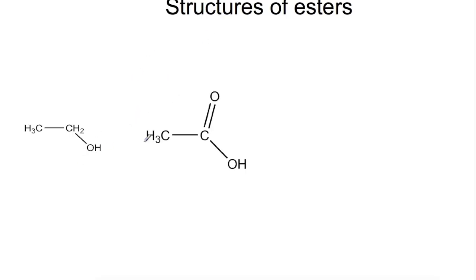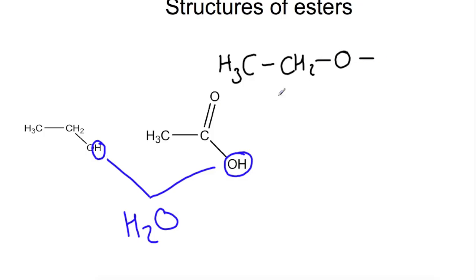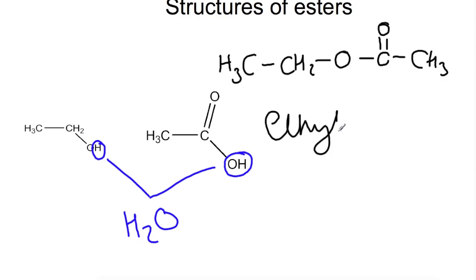Now let's look at the structures of esters. An oxygen is left on each reactant molecule — the H and OH leave to produce water in the condensation reaction. The remaining parts join together: we connect this oxygen to the carbon to form the ester link. Starting from the left we have CH3, CH2, then the oxygen attached to a carbon with a double bond O and a methyl group on the other side. That ester has two carbons from the alcohol — ethyl — and two from the carboxylic acid — ethanoate.